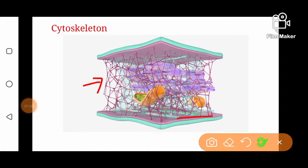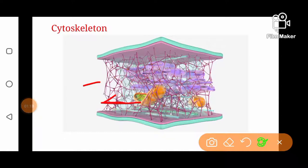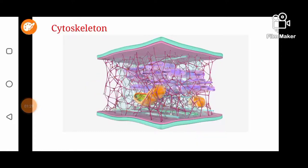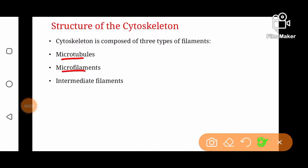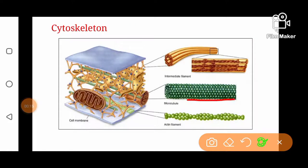The main types are microtubules, intermediate filaments, and microfilaments. Microtubules are the thickest filaments in the cytoskeleton, having a diameter of about 25 nanometers.